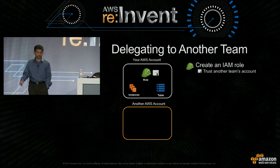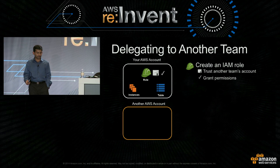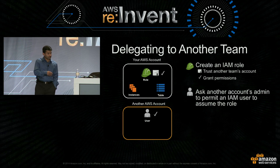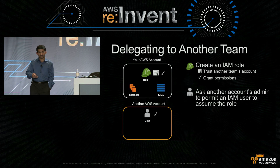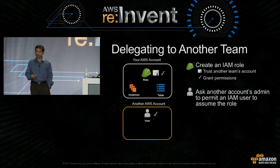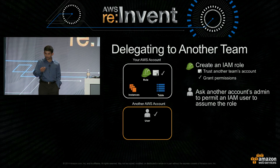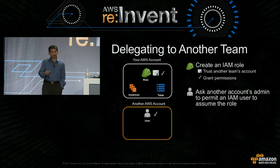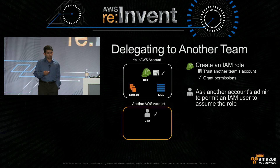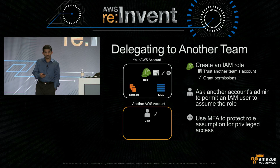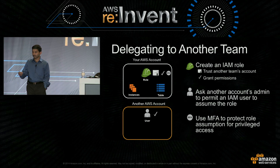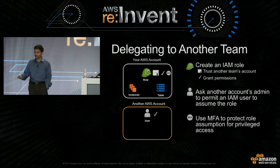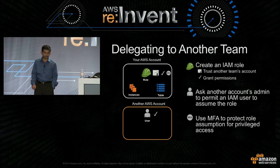Then you trust another account — this will be another team's account — and grant permissions. The other account's administrator needs to create an IAM user in that account so that the user can assume the role. And once the user assumes the role, they get temporary credentials to access resources in your account.